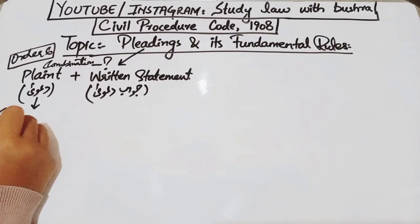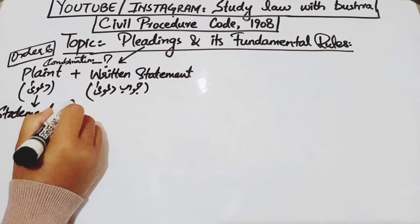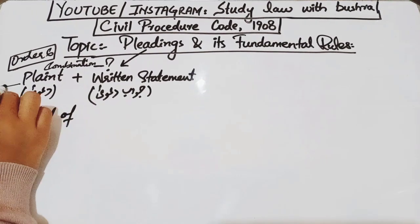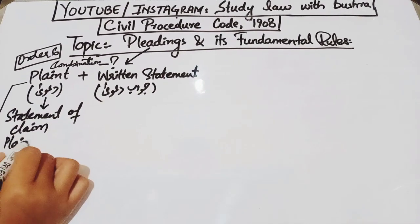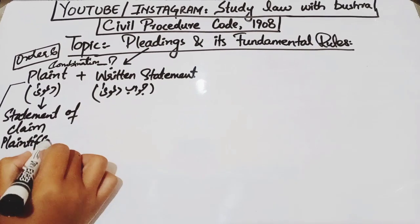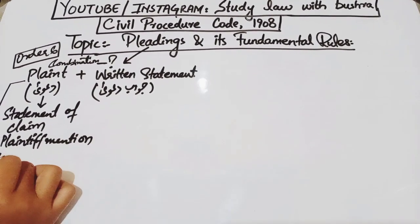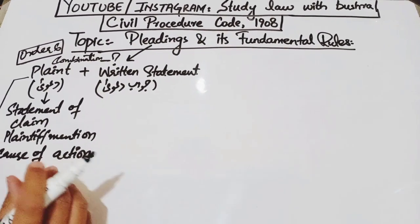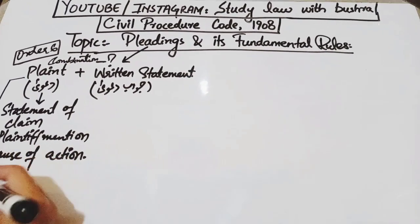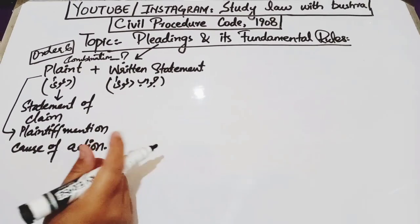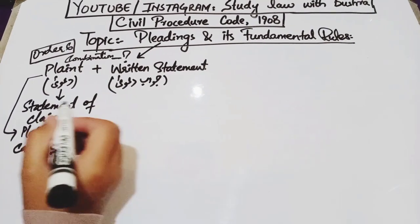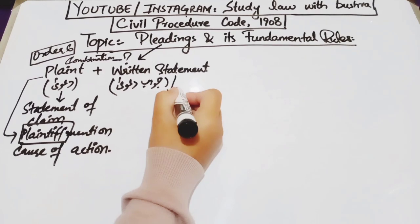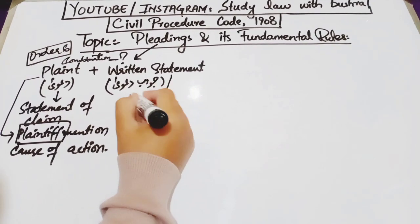Now, what is a plaint? Plaint is basically a statement of claim. In this statement, the plaintiff mentions a cause of action with the necessary particulars. The cause of action is the triggering point which compels the plaintiff to bring this action before the court. So the plaint is simply where the plaintiff mentions the cause of action.